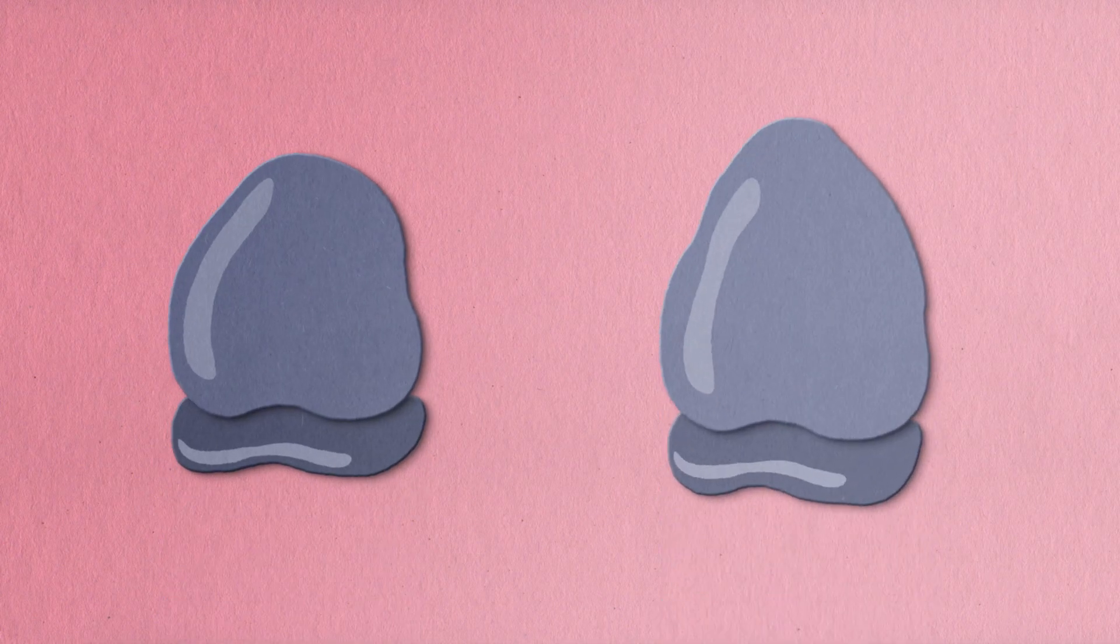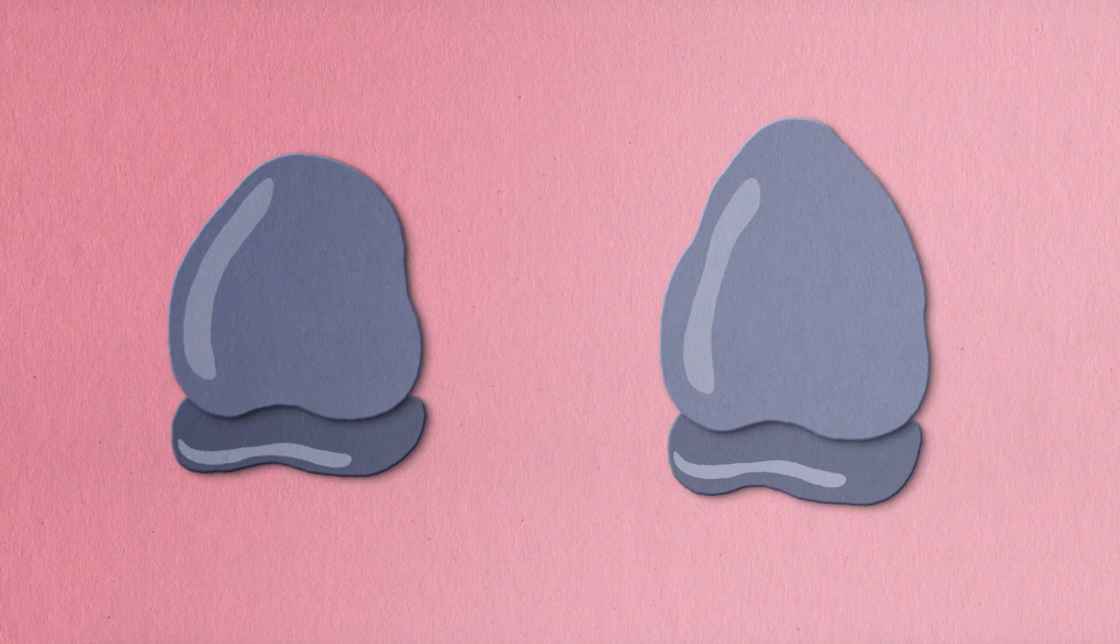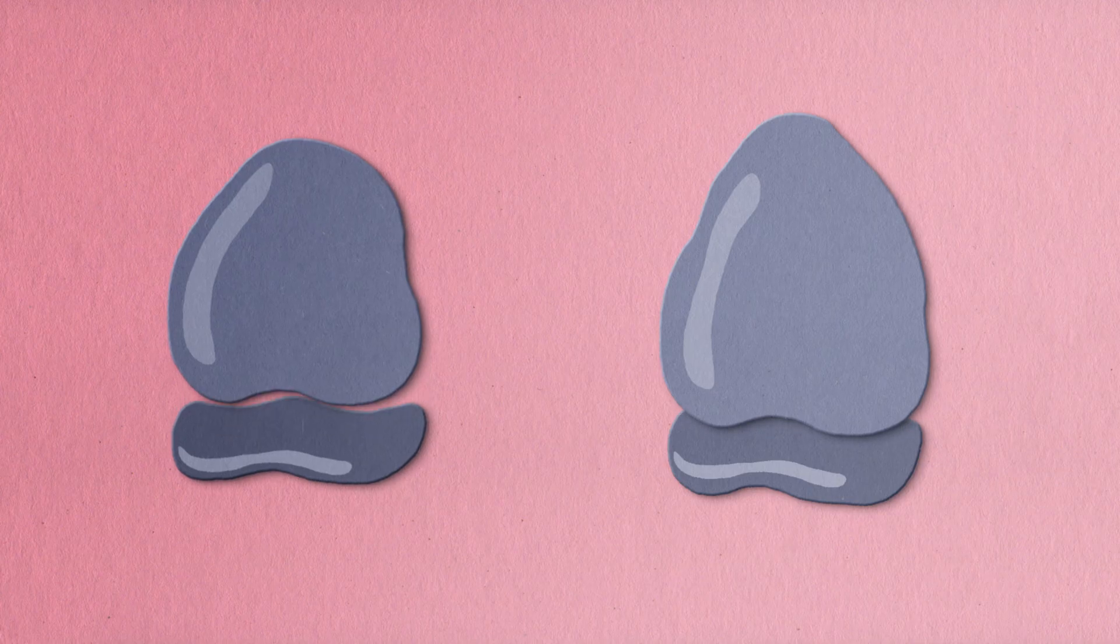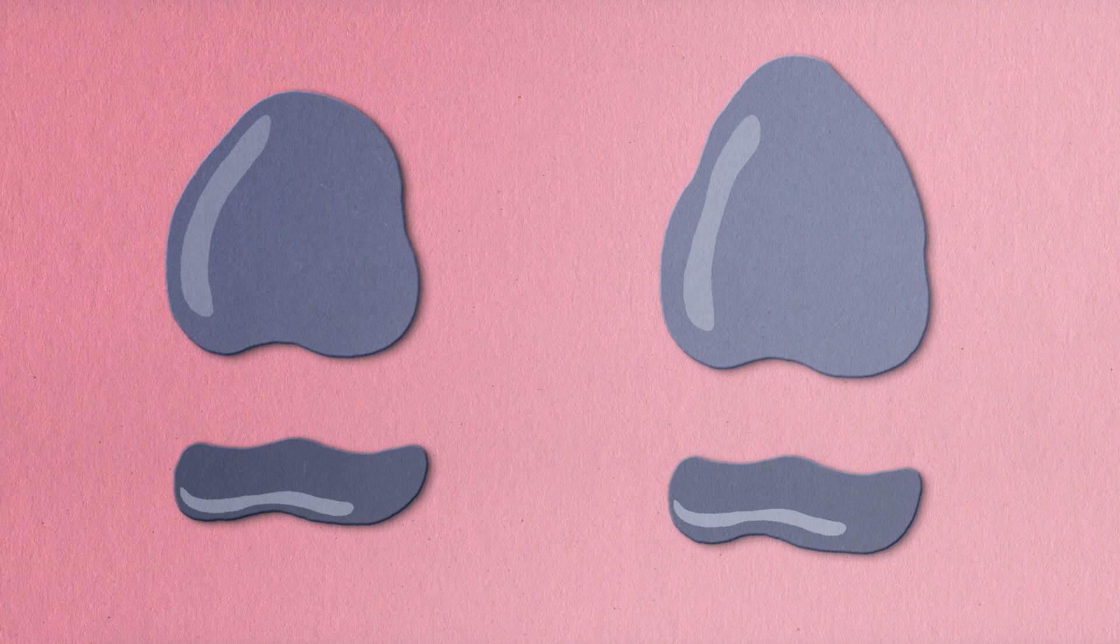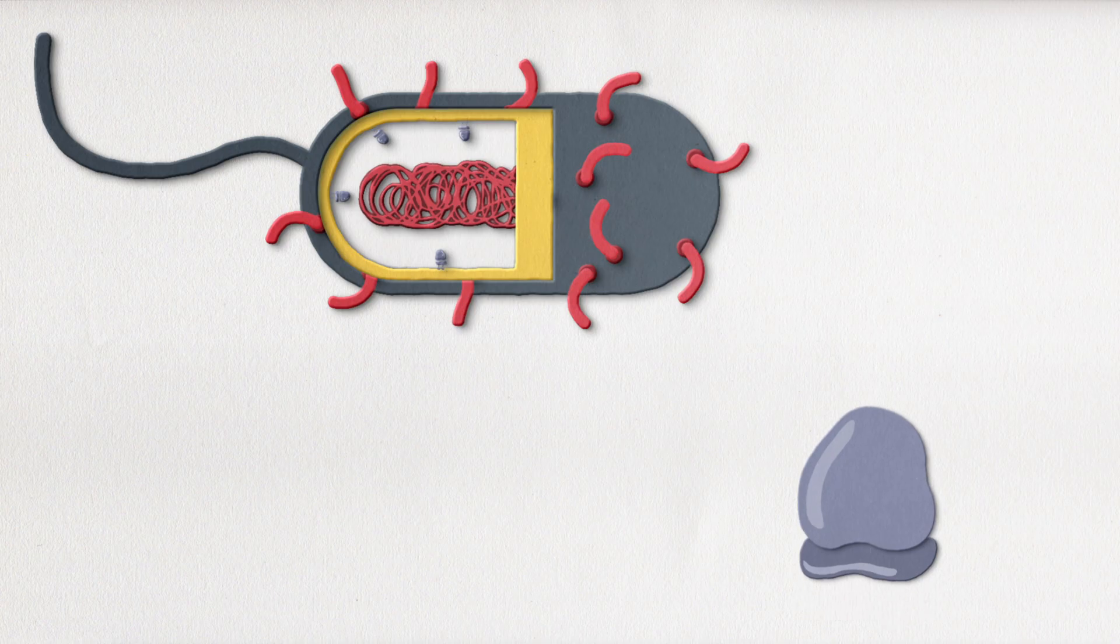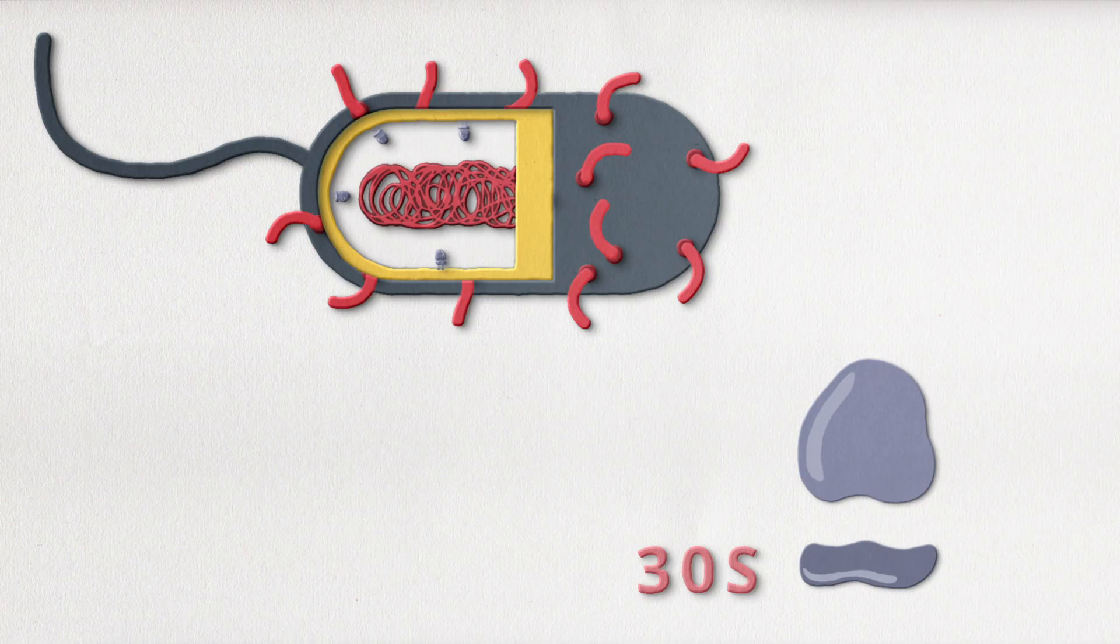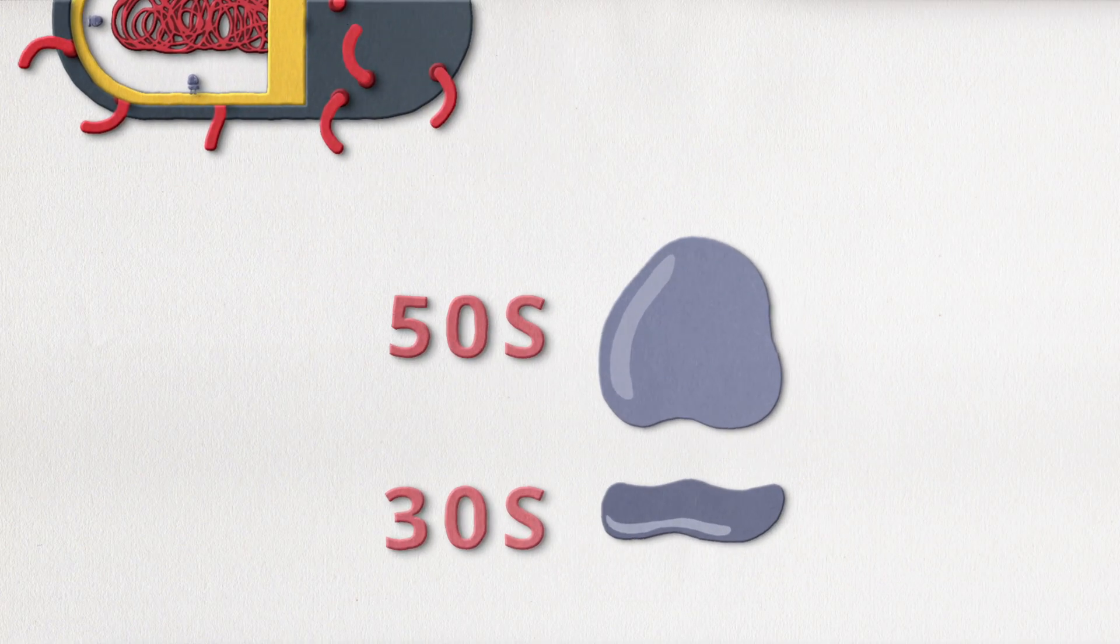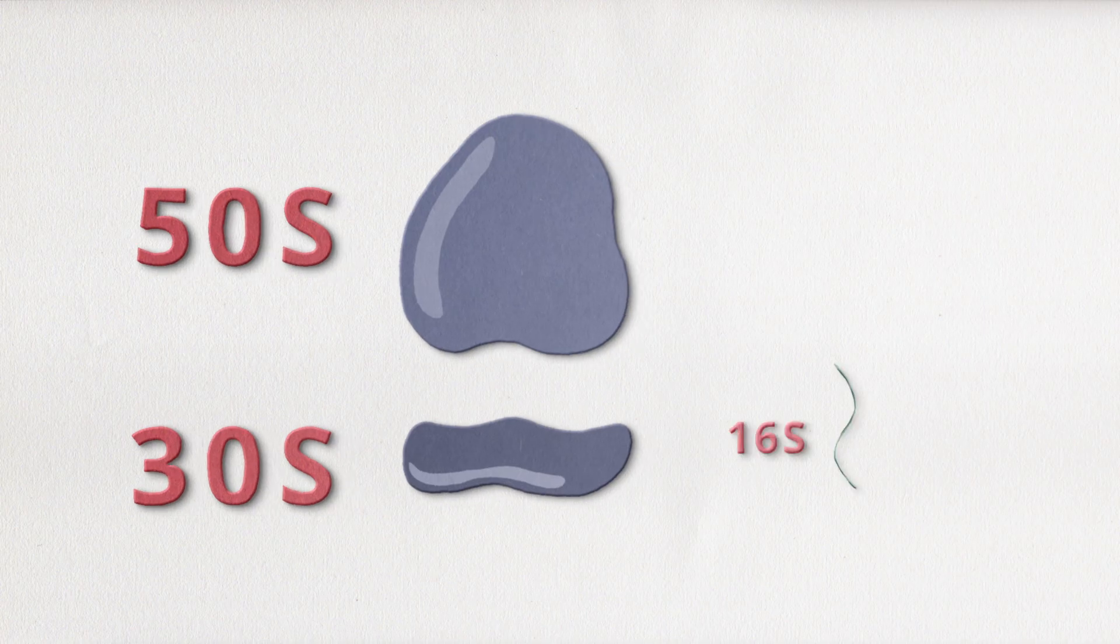Now remember the 70S and 80S ribosomes that we mentioned before for prokaryotes and eukaryotes? Well, we can actually break this down a little further now that we know about the two subunits. Prokaryotes, the organisms with 70S ribosomes, have smaller subunits of 30S and bigger subunits of 50S ribosomes. The 30S subunit contains 16S RNA and 21 proteins.